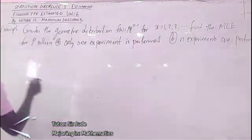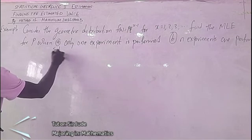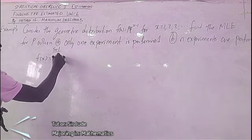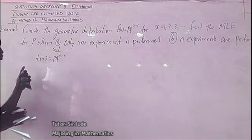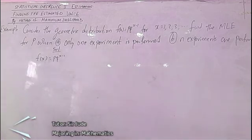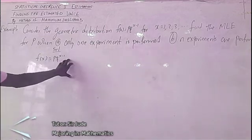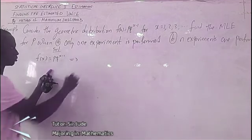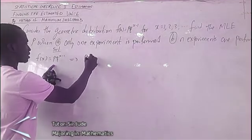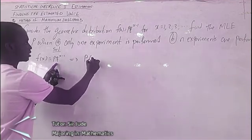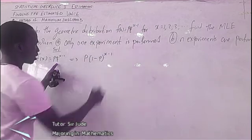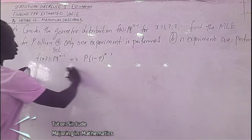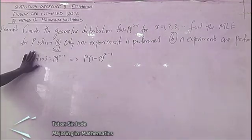That is the first step. So step one — we are given f(x) equal to p times q to the power x minus 1. That is the most important thing we have here. Now, you know that I can rewrite this: q is 1 minus p, right? So f(x) = p times (1 minus p) to the power x minus 1. That is the first step — if you know the distribution function, this is it.